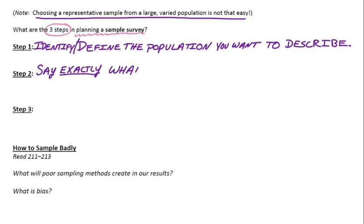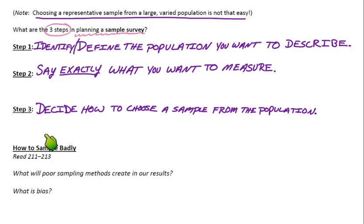And then from there, the second step is we need to say exactly what we want to measure within that population. And then step three, we're going to decide how to choose a sample from that population that we're interested in. So start by identifying exactly what group you'd like to learn about. Then what exactly you want to measure about that group. And then we'll decide how we're going to choose our sample from the population.